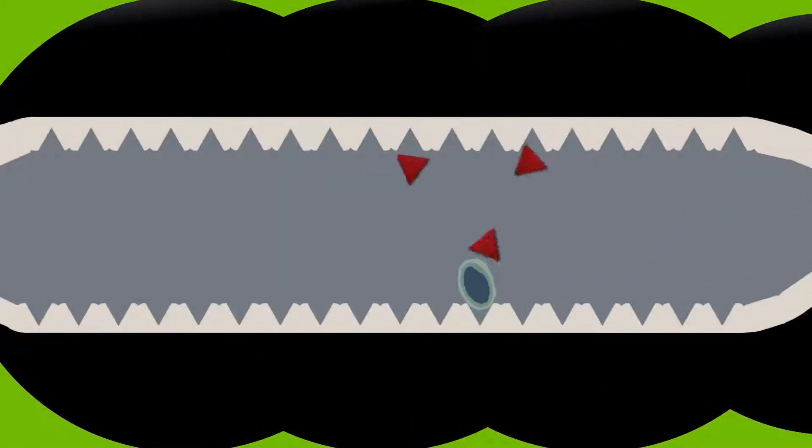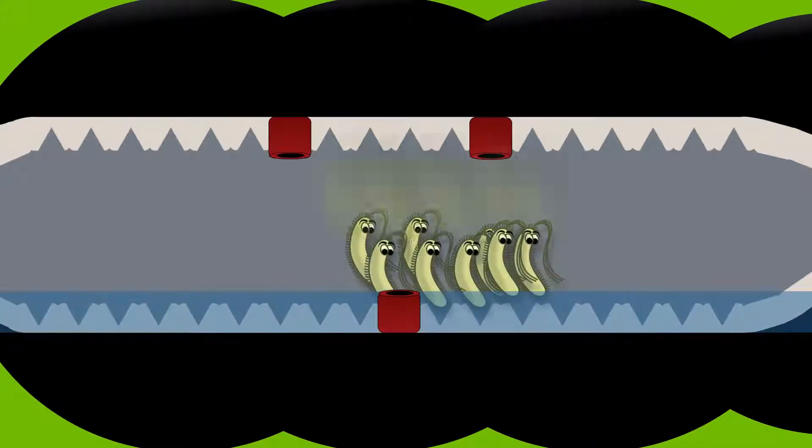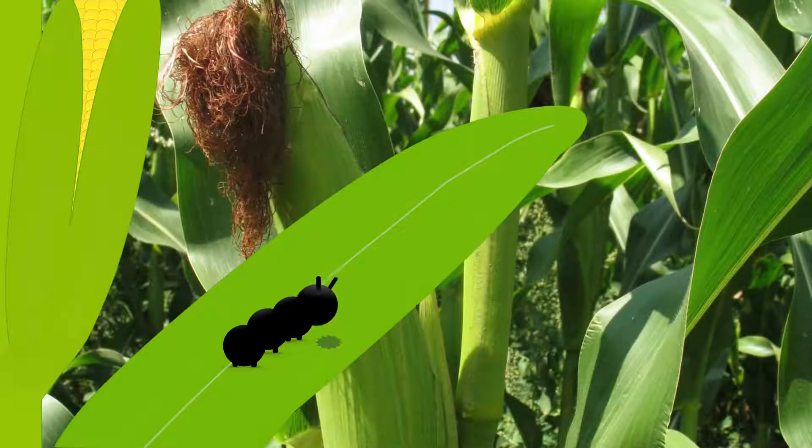When these insects eat the protein, it changes shape and attaches to the insect gut wall, creating holes in it. Soon after, these insect larvae stop feeding and they eventually die.